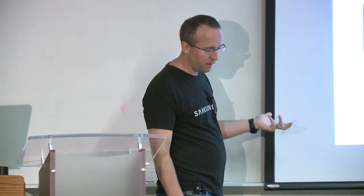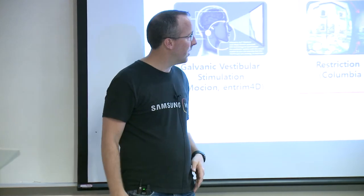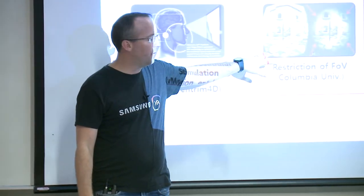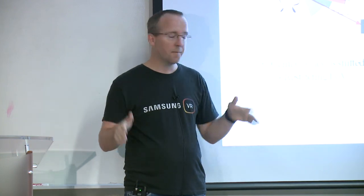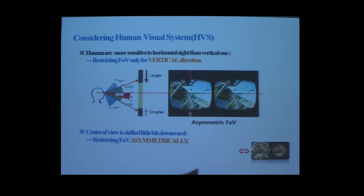That's counterintuitive to what you typically want in VR, which is 180-degree field of view in both directions. But if you can cheat it somewhat, you can counterbalance motion sickness. From a human factors perspective, it's easier to move your head left-to-right than up and down, so a lot of VR UI is designed to work left to right. You're also not as sensitive to field of view up and down because you have eyelids and eyelashes that you're used to having flicker in your face. So taking away from the vertical field of view is very easy to do without the user noticing.